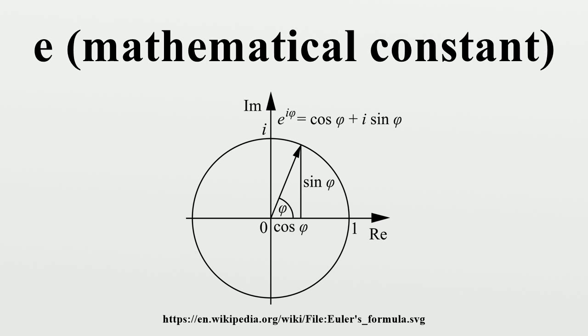All five of these numbers play important and recurring roles across mathematics, and are the five constants appearing in one formulation of Euler's identity. Like the constant pi, e is irrational.